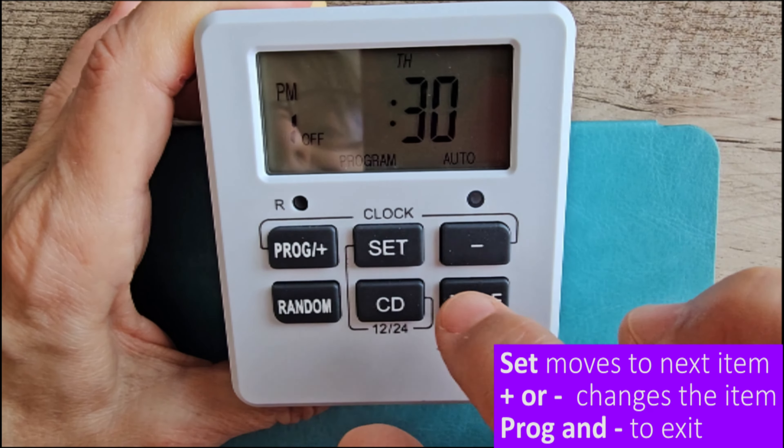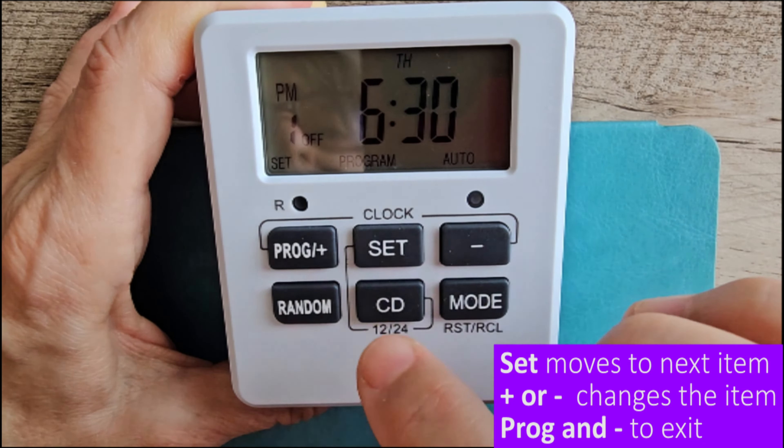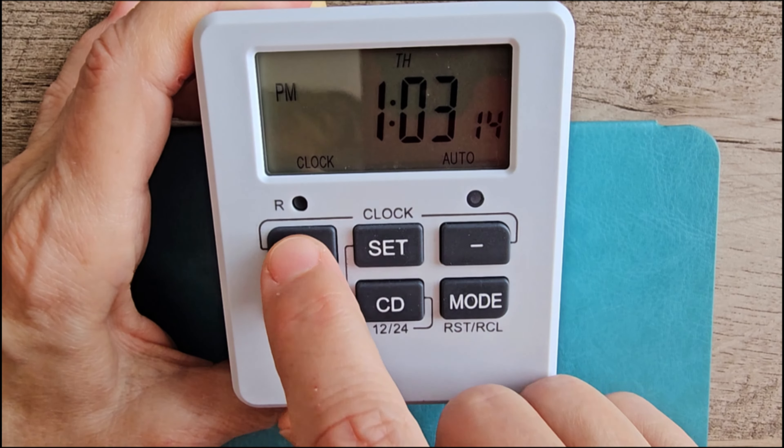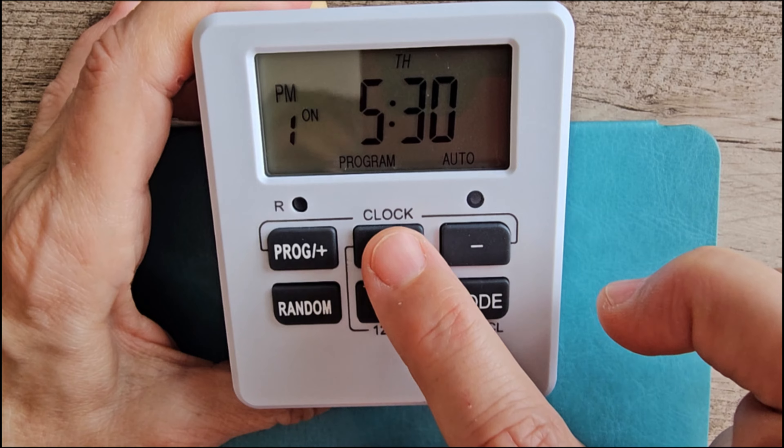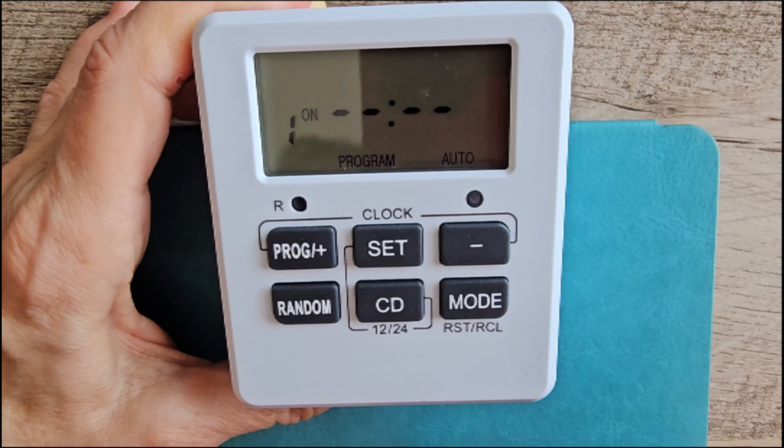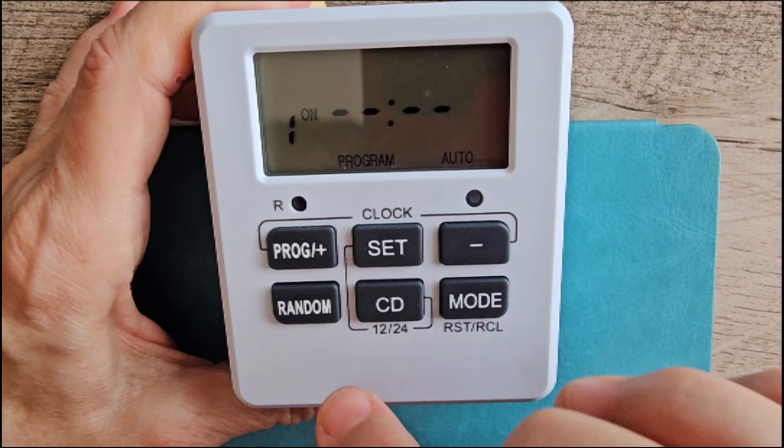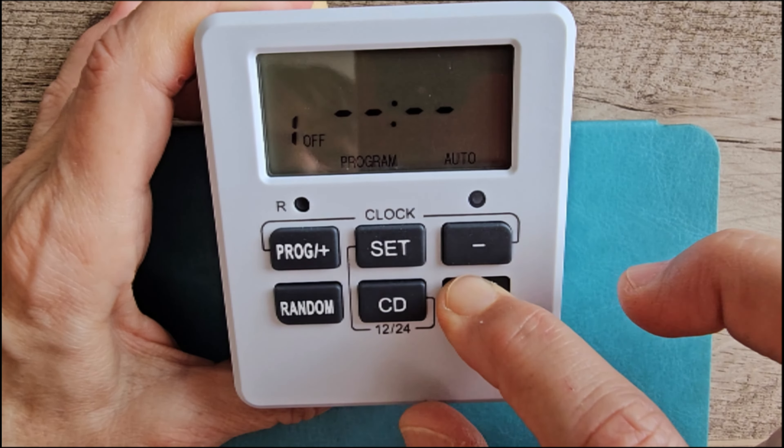Go ahead and press program again to move on to one off. When do we want it to go off? Let's say we wanted to go off on Thursday at 6:30. So press set. Go through until you get to Thursday. Press set. Go up one. We're fine with the minutes, so just press set again. And go on to the next one. If you have no more to do, exit out with the program in minus.